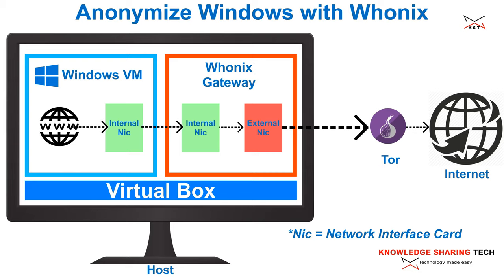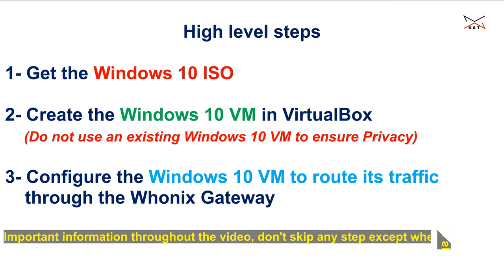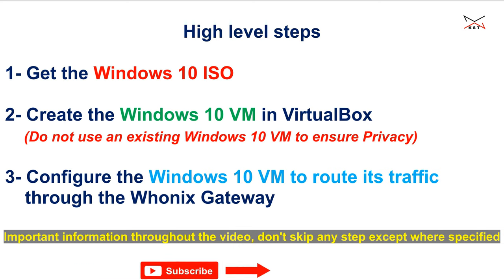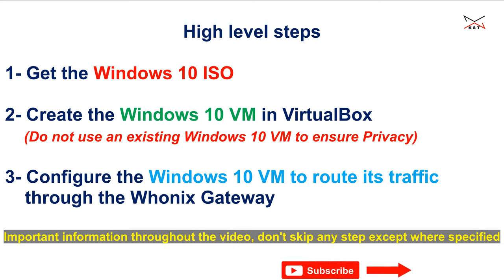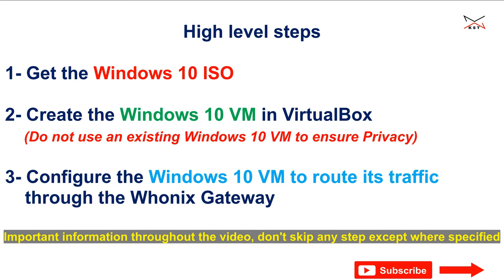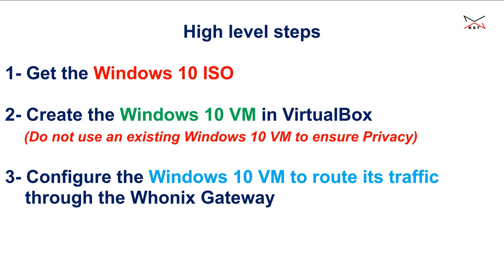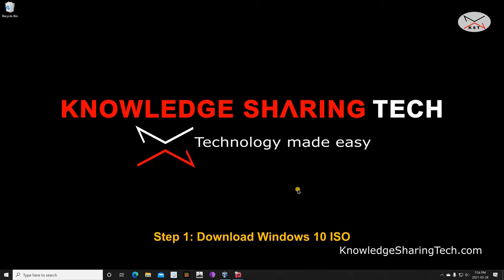Here, after you have Hunix and VirtualBox installed on your Windows 10 PC, you need to install Windows 10 in a VirtualBox environment and reroute its traffic through the Hunix gateway. To do this we need three things: first the Windows 10 ISO, then we need to create a Windows 10 machine in VirtualBox, and then we need to configure Windows 10 to reroute all its network traffic through the Hunix gateway.